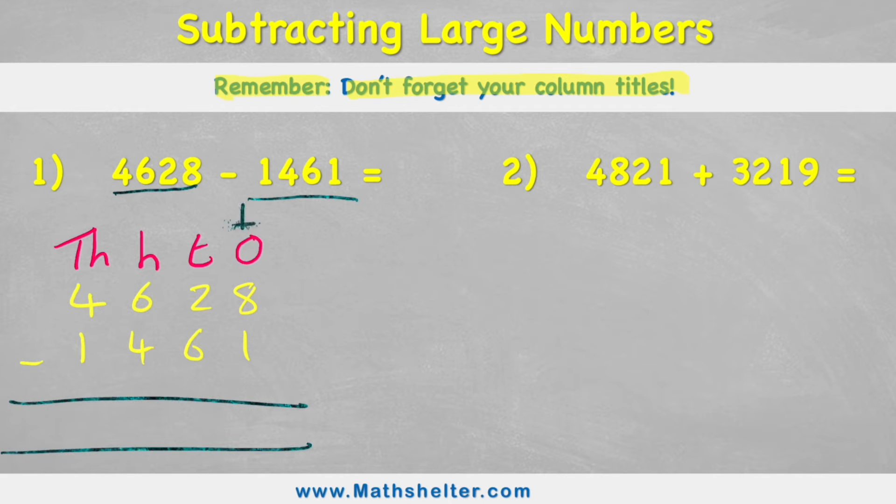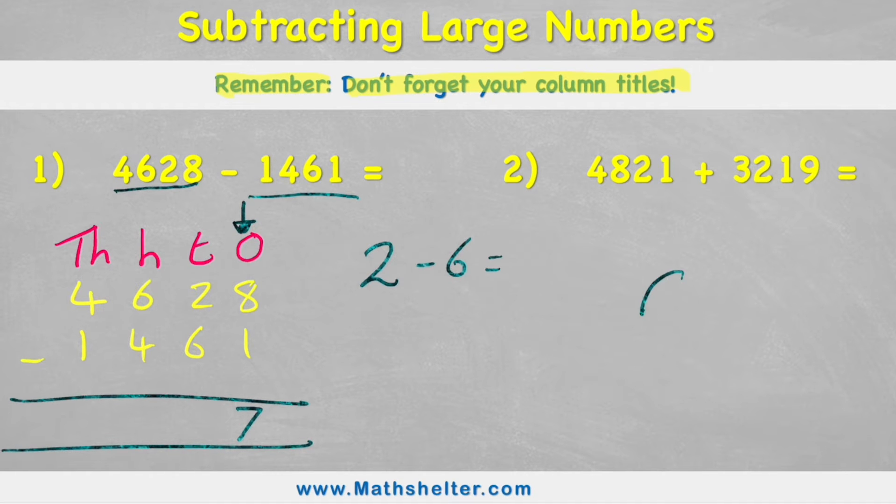So now I'm ready to start. I'll put my equals row and I can begin with my smallest value, which is my ones. In this case, my first question is 8 subtract 1. Eight subtract 1 is 7, so in my answer row I can put 7. Now in my tens column I have 2 tens subtract 6 tens. Ah, now I have a problem.